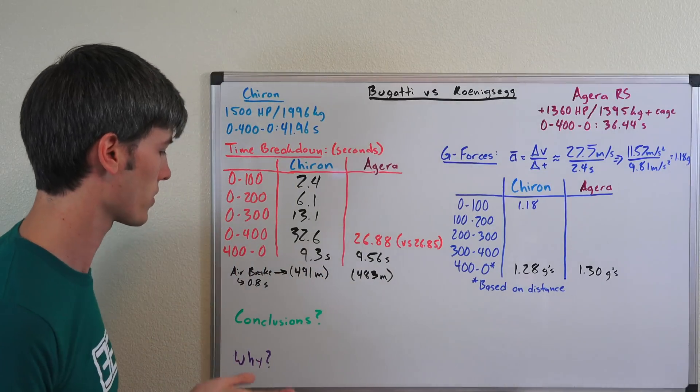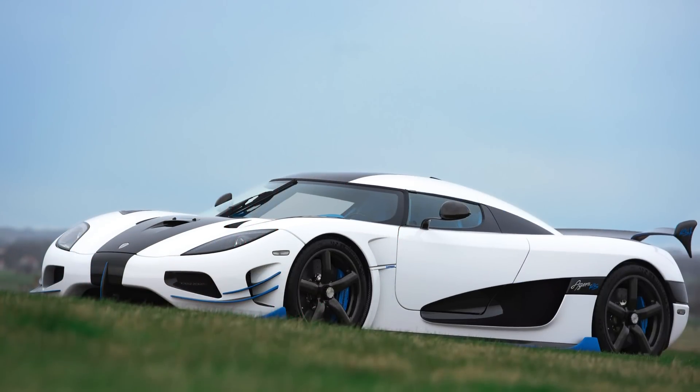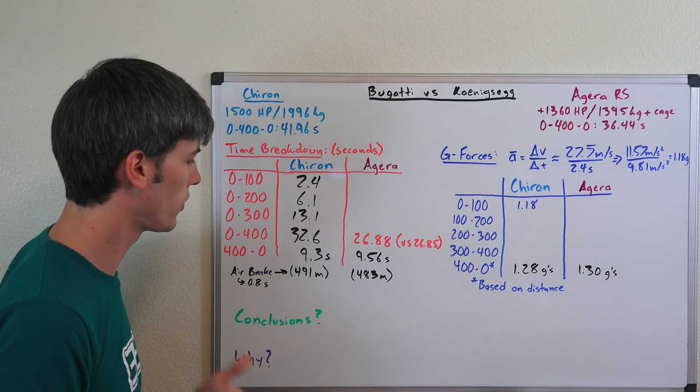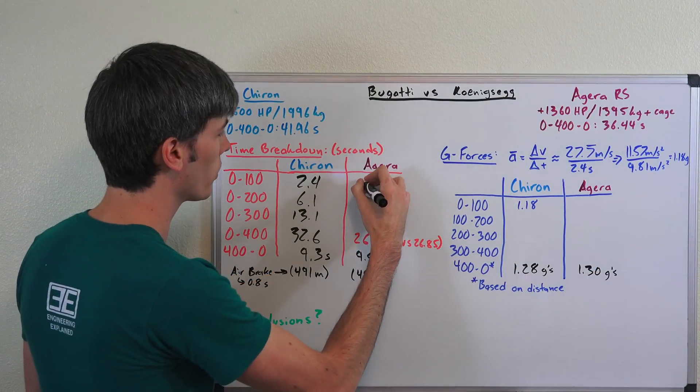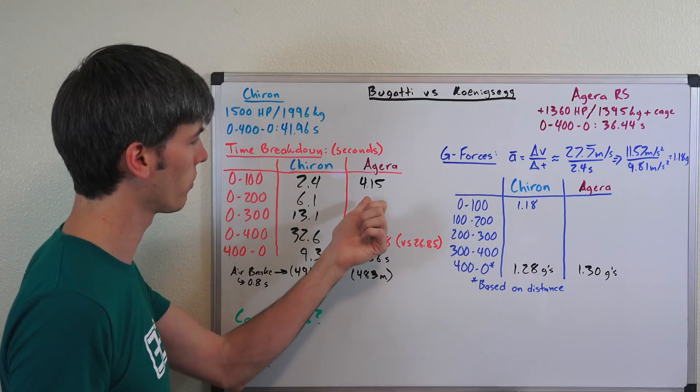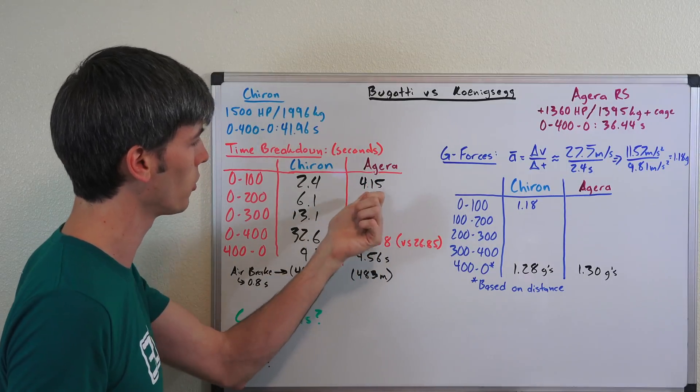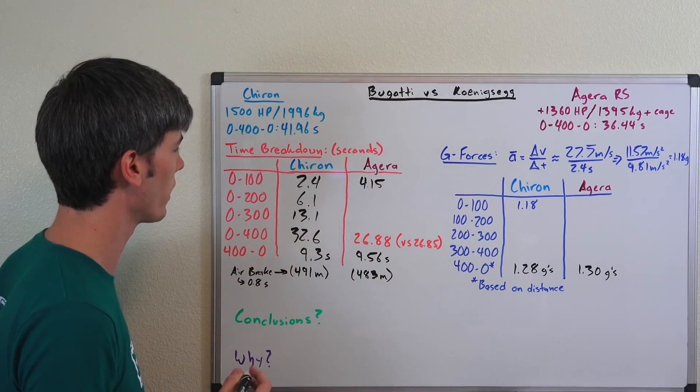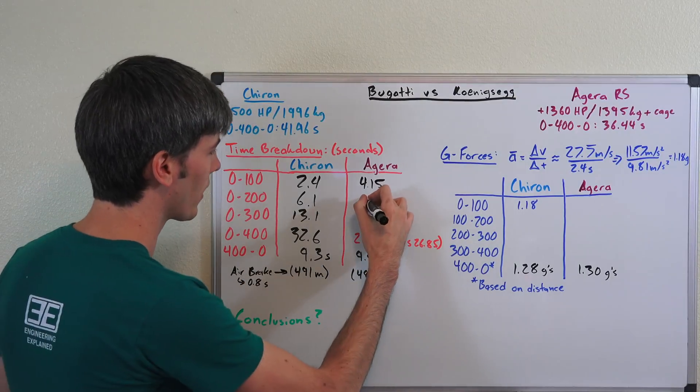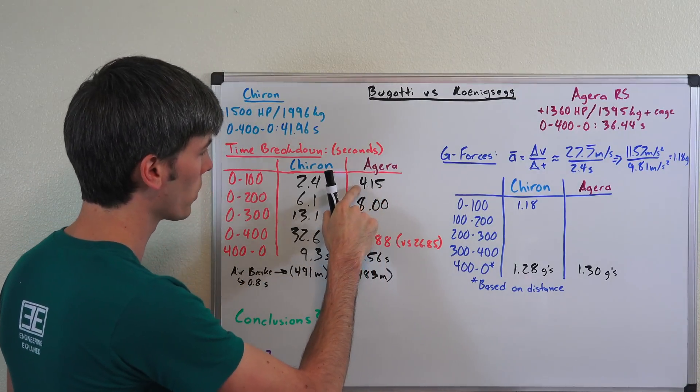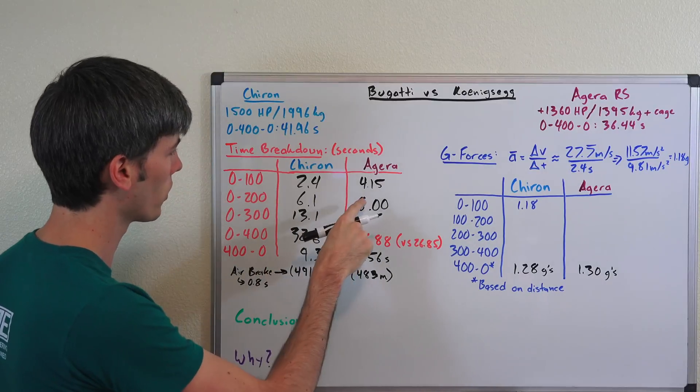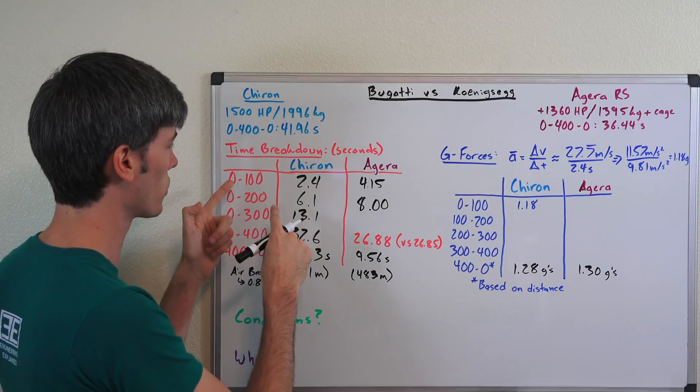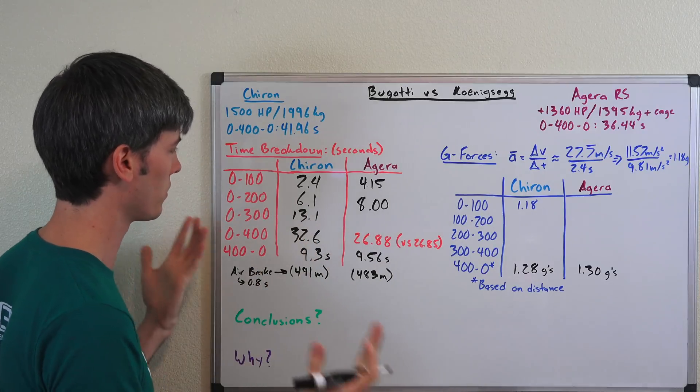Now Koenigsegg talked about the poor track conditions and the low levels of grip and you actually see that in their data. 0 to 100 in 4.15 seconds, which obviously for the Agera is not very good. It could definitely do better with better track conditions. Lots of wheel spin they were having there. 0 to 200, 8 seconds flat, and that proves they were having quite a bit of wheel slip in that 0 to 100 because in less time they went from 100 kilometers to 200 kilometers than it took to go from 0 to 100. Shouldn't be the case.